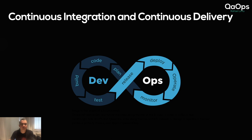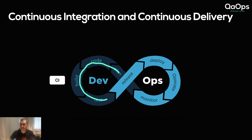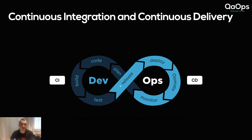Talking about continuous integration and continuous delivery — on the left of the DevOps image we have Dev, which is CI: continuous integration, where you start with plan, code, build, and test. On the right you have Ops, which is continuous delivery: release, deploy, monitor, and so on. The difference between continuous delivery and continuous deployment is that continuous delivery deploys to an environment that is not production — it can be QA, showcase, or a release environment.